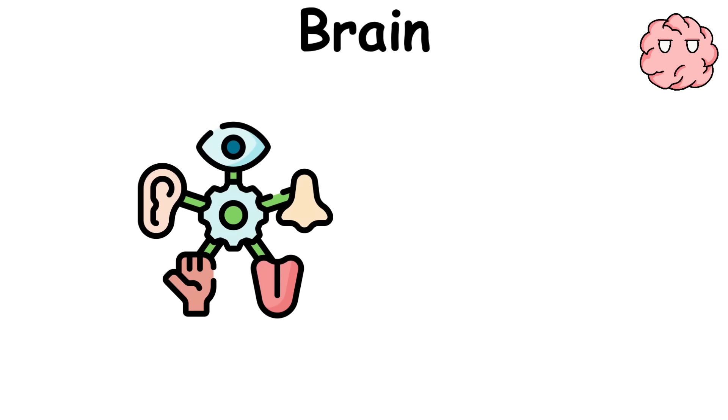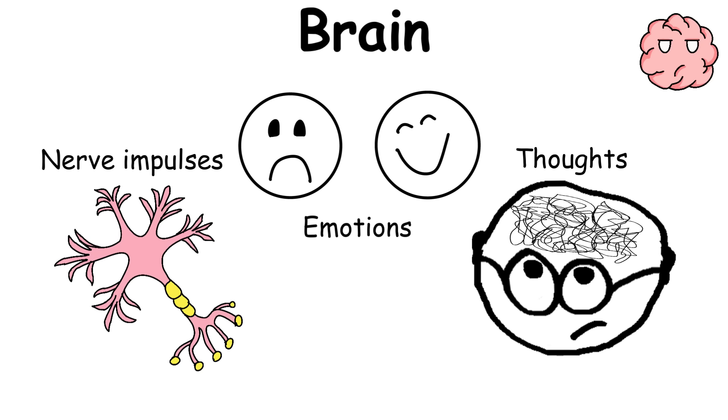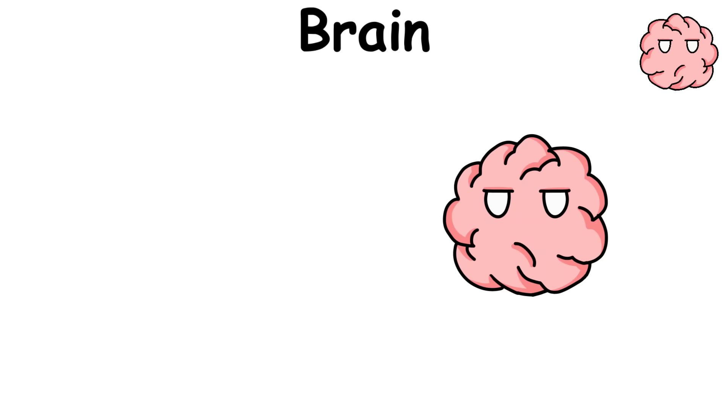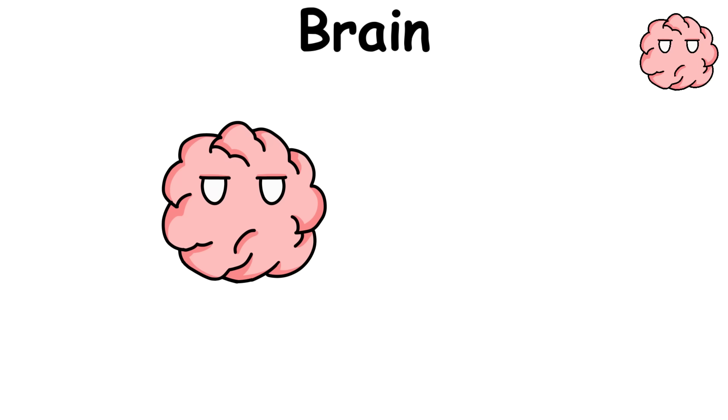The brain is responsible for processing every single aspect of the body, including our nerve impulses, emotions, and thoughts. The brain is an absolute energy user, taking up almost 25% of the body's energy despite making up less than 5% of the total weight.